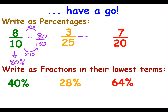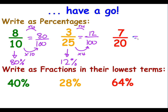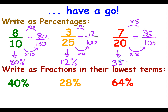For the next one, we need a denominator of 100. To get from 25 to 100, I multiply by 4. What I do to the denominator I do to the numerator, giving 12 over 100. So the fraction 3 over 25 is the percentage 12%. Finally, for 7 over 20, to get from 20 to 100 we multiply by 5. Do the same to the numerator — 7 fives are 35. So 7 over 20 is the percentage 35%.